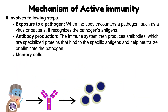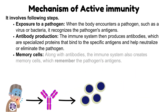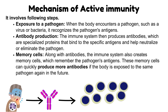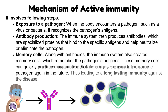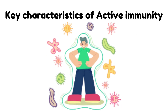Memory Cells: along with antibodies, the immune system also creates memory cells, which remember the pathogen's antigens. These memory cells can quickly produce more antibodies if the body is exposed to the same pathogen again in the future, thus leading to long-lasting immunity against the disease.